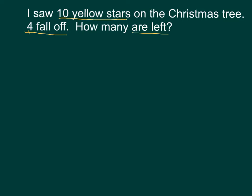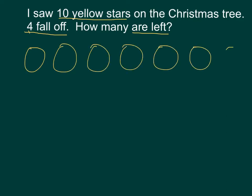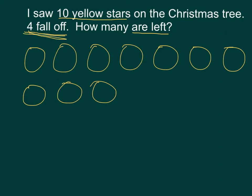Are you ready to check your work? Let's see what you had. The story says I saw ten yellow stars on the Christmas tree, so I'll start out by drawing my ten yellow stars — one through ten. I don't have to draw stars; I like to draw circles because they're easy, fast, and I can keep my work nice and neat. In the story it says that four fall off. If they fall off, I have to get rid of them, so I'm going to cross them off — one, two, three, four.